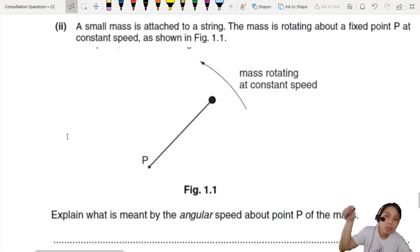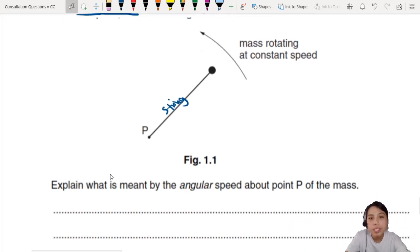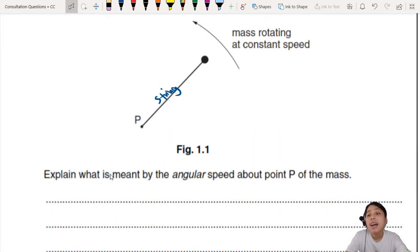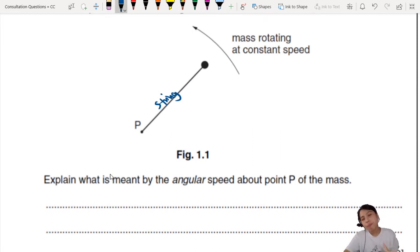Now we come to circular motion. A small mass attached to a string, rotating about fixed point at a constant speed. Explain what is meant by angular speed about point P of the mass. Angular speed is saying how fast is this thing rotating?